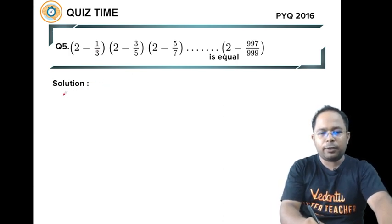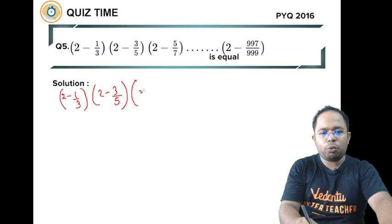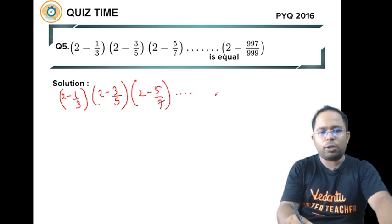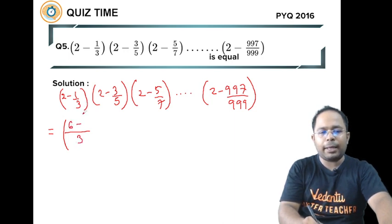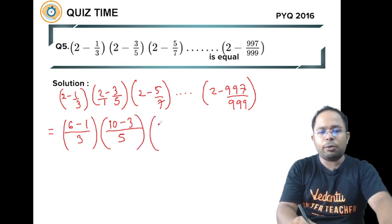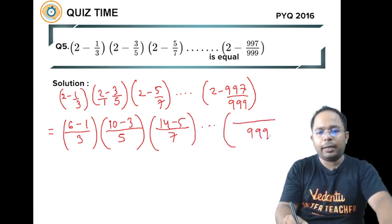If you are getting 1001 by 3, that's very amazing. Let's see how we can solve this question. 2 minus 1 by 3, we'll just solve them. Taking LCM, 2 by 1 and 1 by 3, LCM is 3, so 6 minus 1 equals 5 by 3. Similarly, 2 minus 3 by 5 gives 10 minus 3 equals 7 by 5. Next, 14 minus 5 equals 9 by 7. And finally, 999 into 2 is 1998 minus 997.